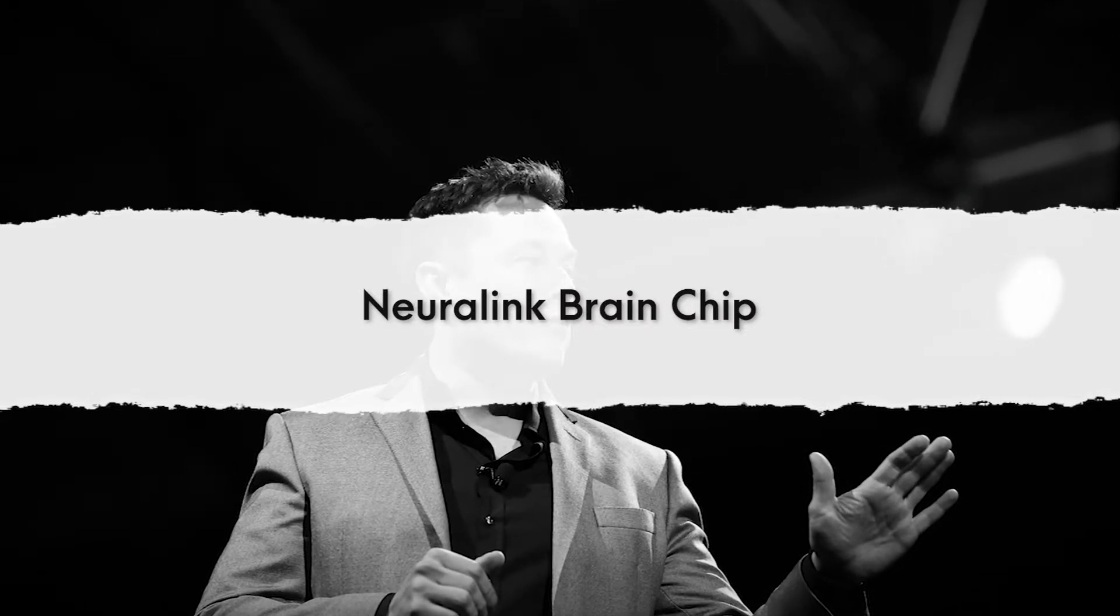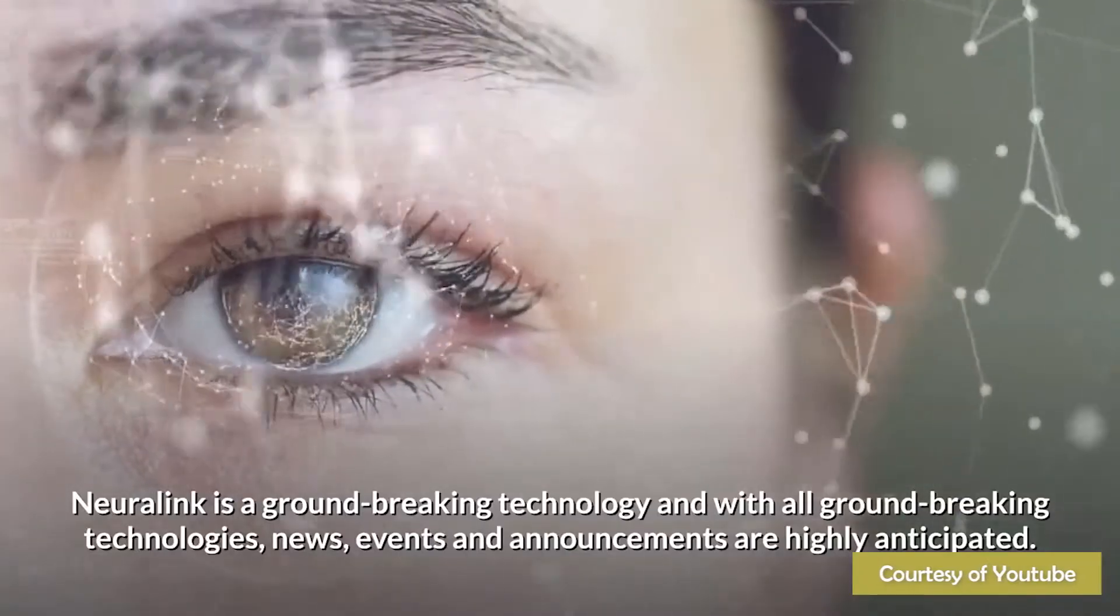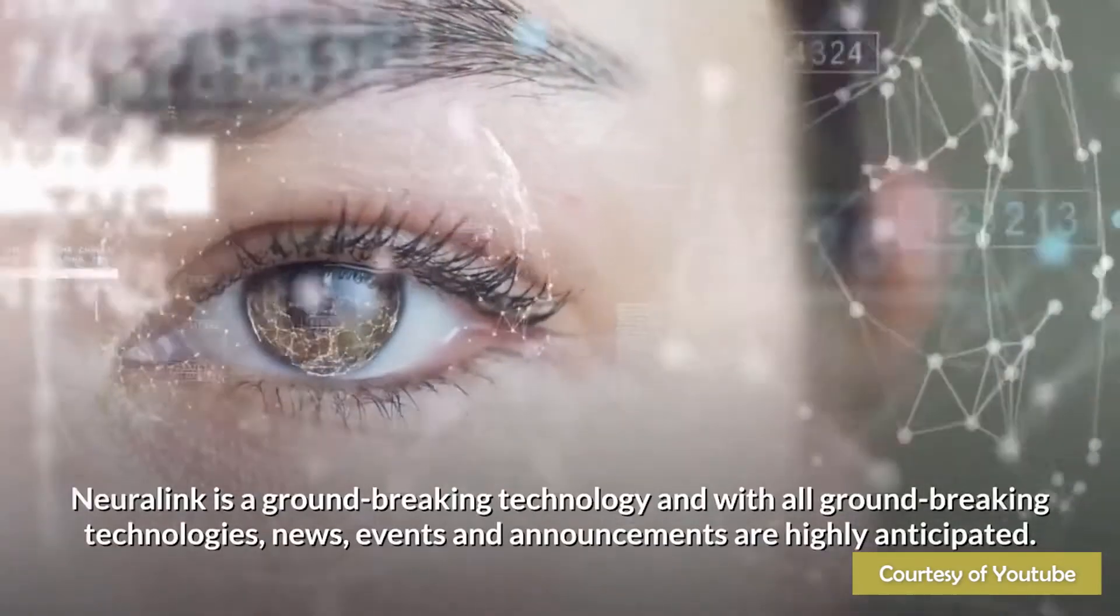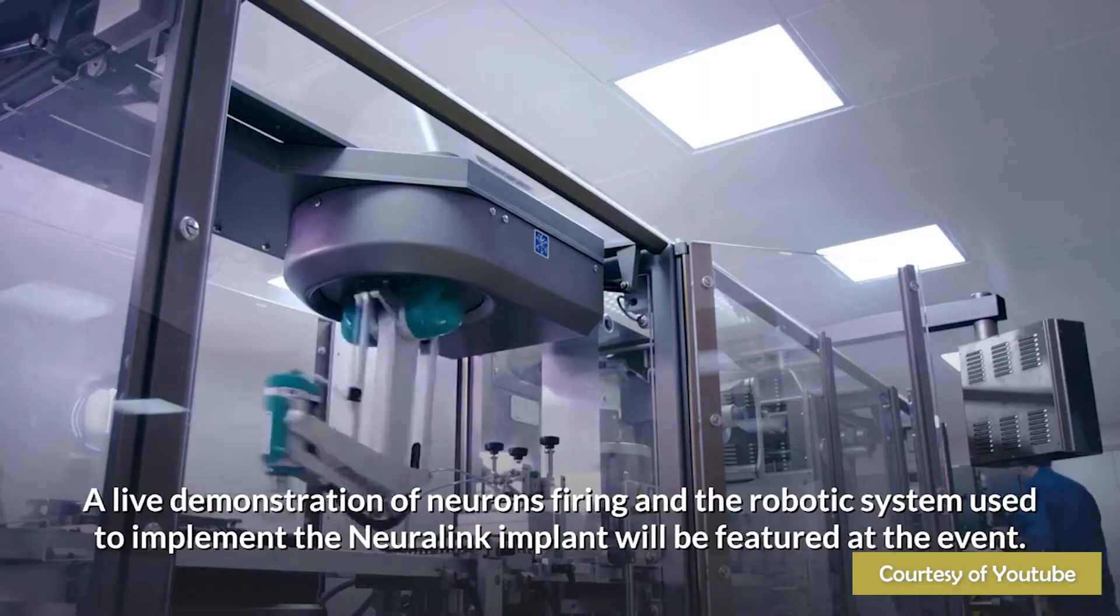The Neuralink Brain Chip is Musk's solution to fight against mental disorders like depression and addiction and brain diseases like Parkinson's and Alzheimer's.